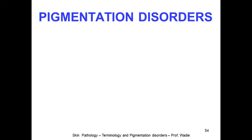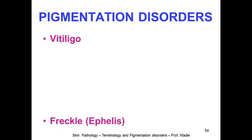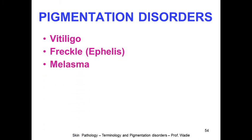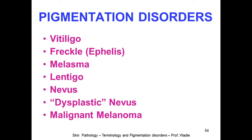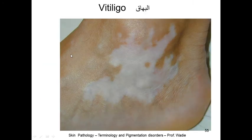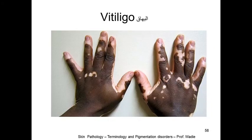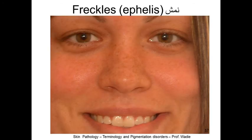Now we have some pigmentation disorders — we will name them but not go into full pathological detail. These include: vitiligo, freckles or ephelis, melasma, lentigo, nevus and dysplastic nevus, and malignant melanoma. Vitiligo is a hypopigmentation of the skin associated with certain diseases or can be idiopathic. Freckles are areas of discoloration producing certain regions with darker pigmentation.